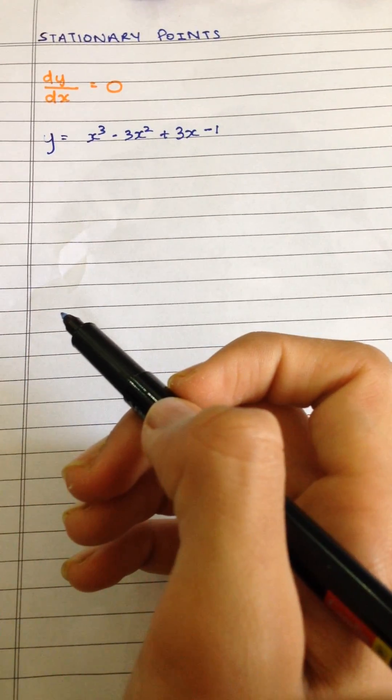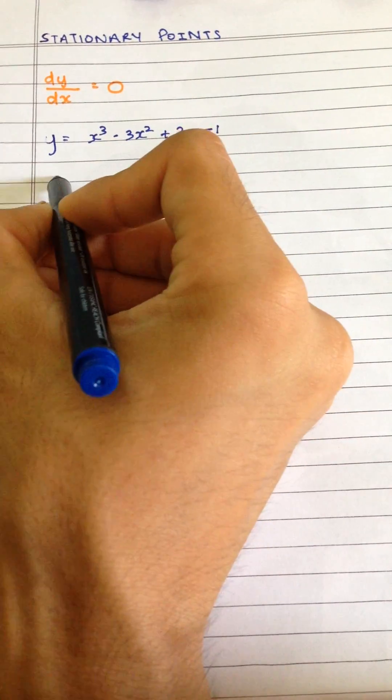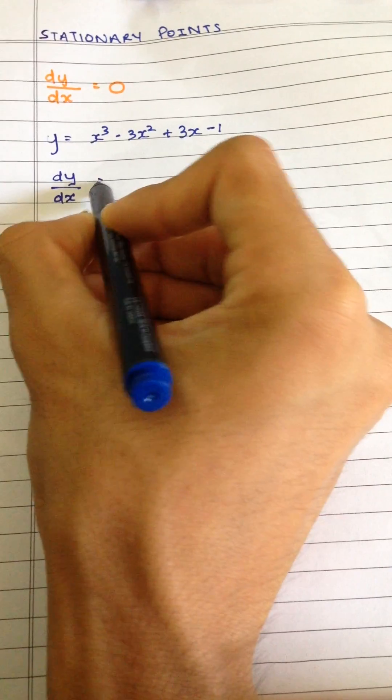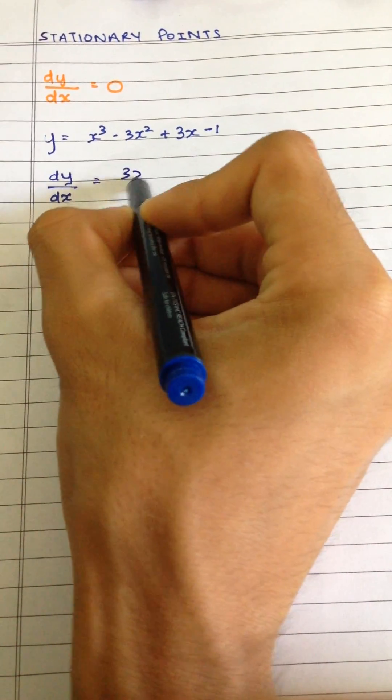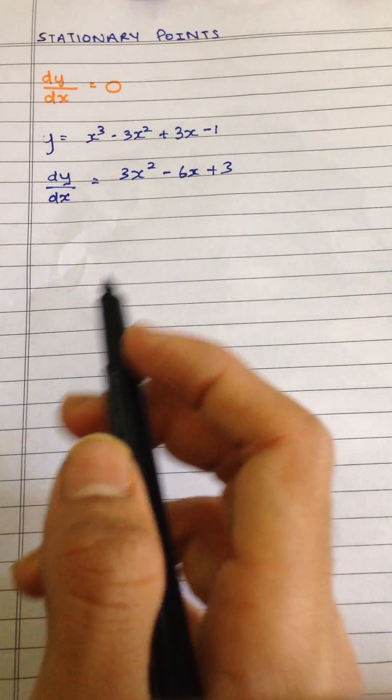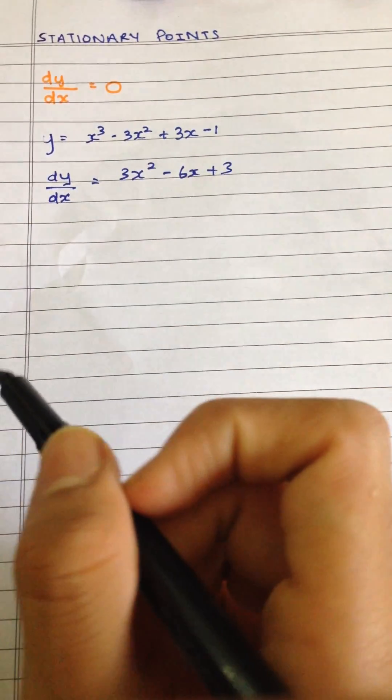First of all, what we have to do is differentiate it. So dy by dx is equal to 3x squared minus 6x plus 3. So that's what we get after differentiating it.